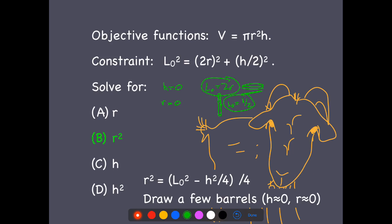And so this tells me that h over 2 has to be... Let's see. The biggest h can be, or h over 2 can be, is L₀.